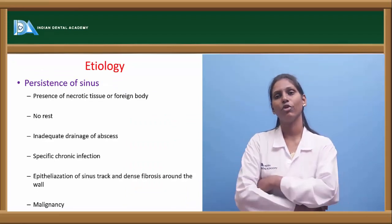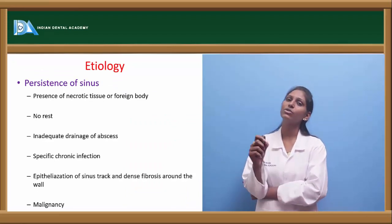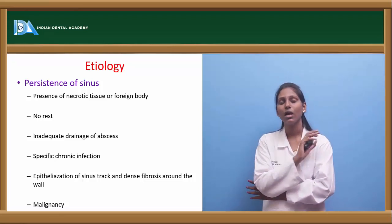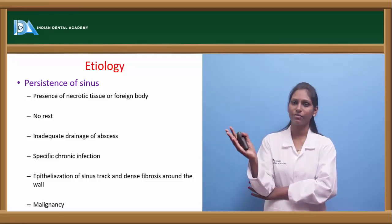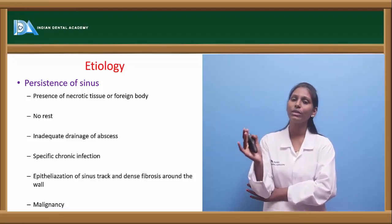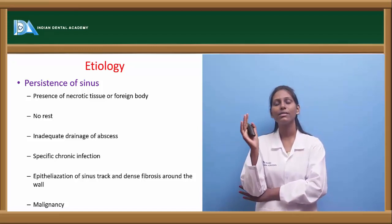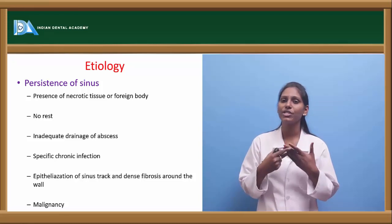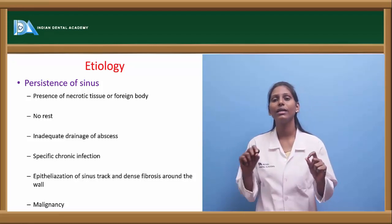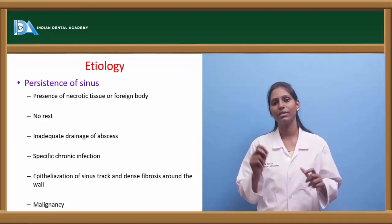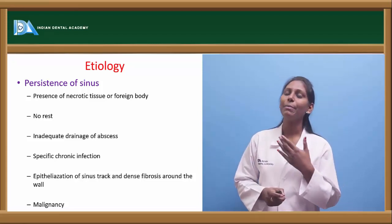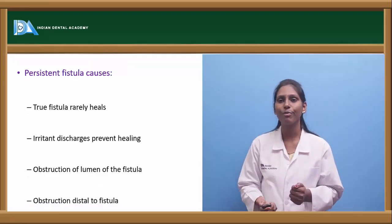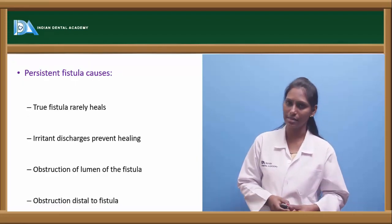Coming to etiology — why is a sinus or fistula formed? First, persistence of a sinus: if there is any necrotic tissue or foreign body not properly drained, it can lead to sinus formation. Inadequate drainage of any abscess, specific chronic infection with continuous discharge taking the least resistant pathway, epithelialization of the sinus tract, dense fibrosis around the wall, and malignancies can all cause persistent sinuses.